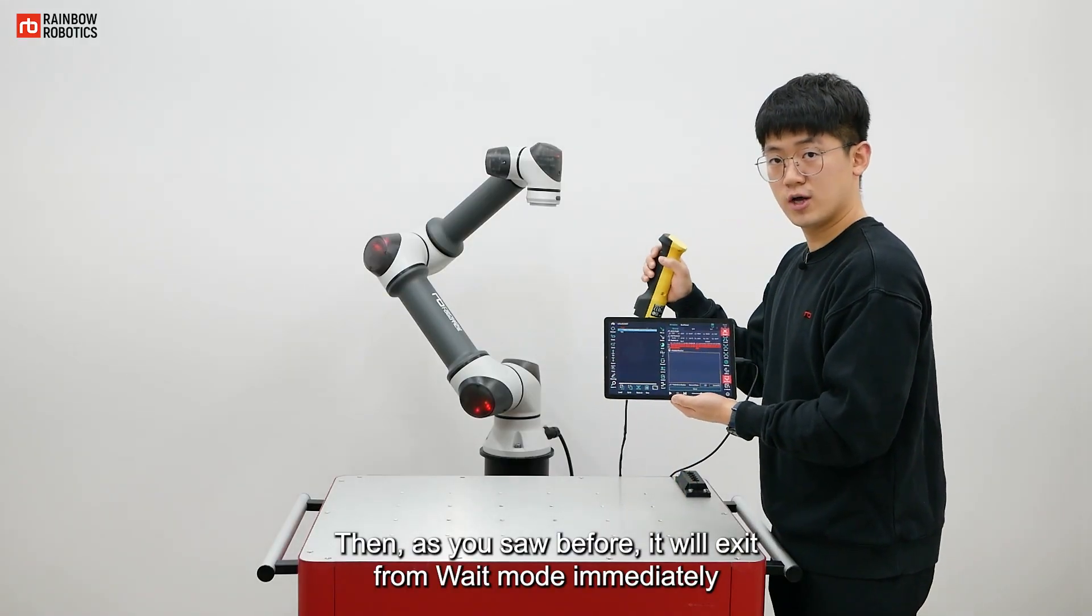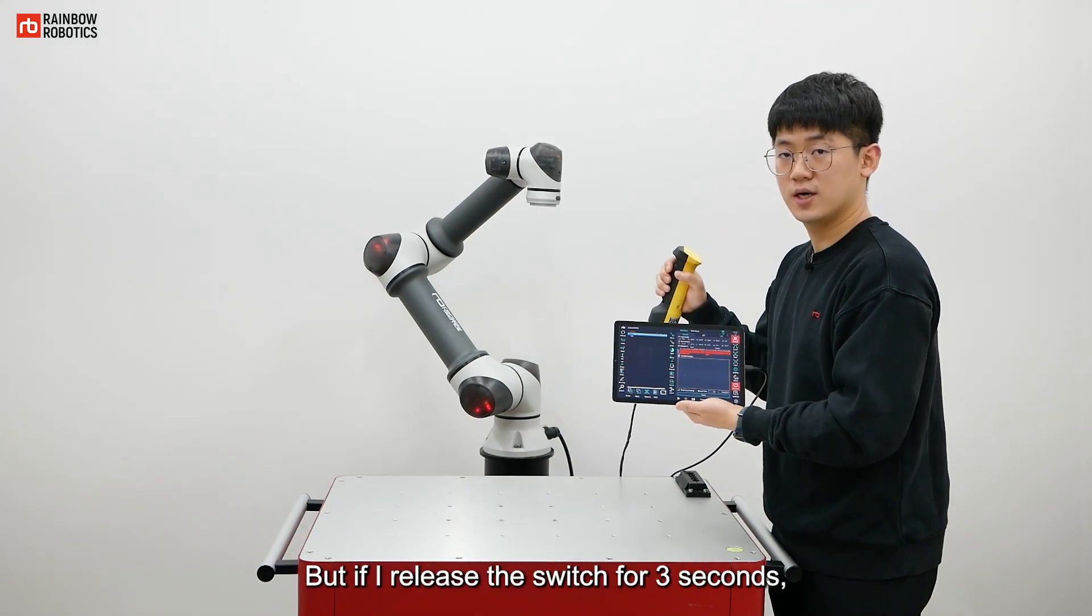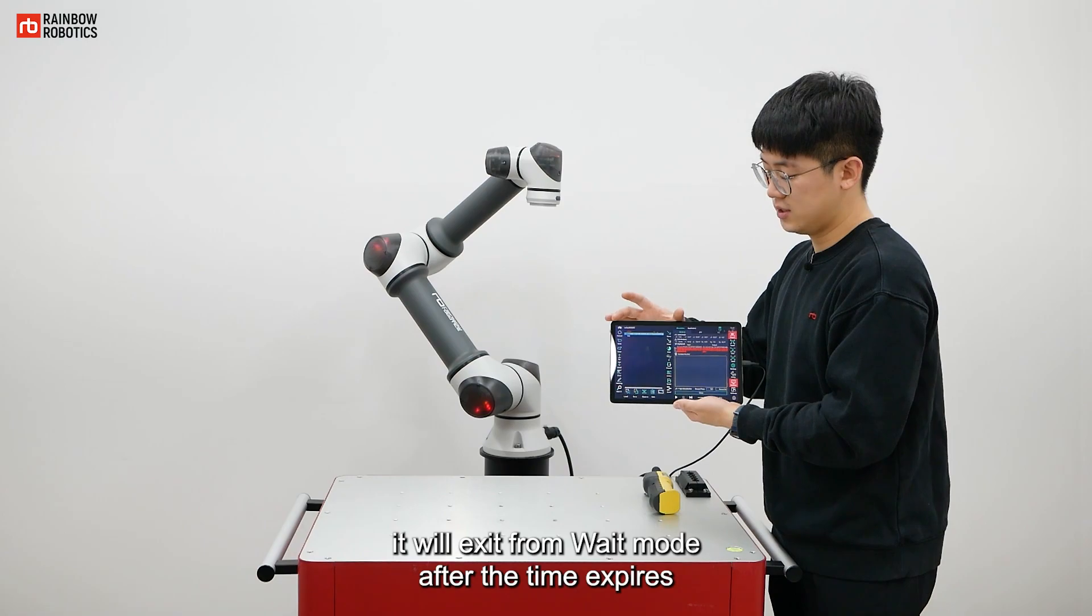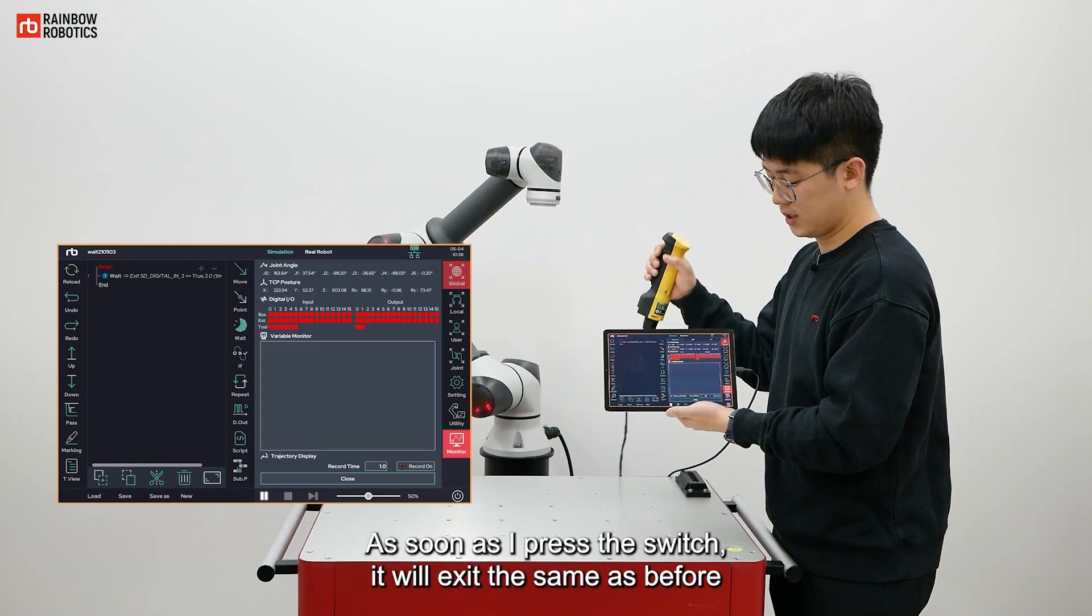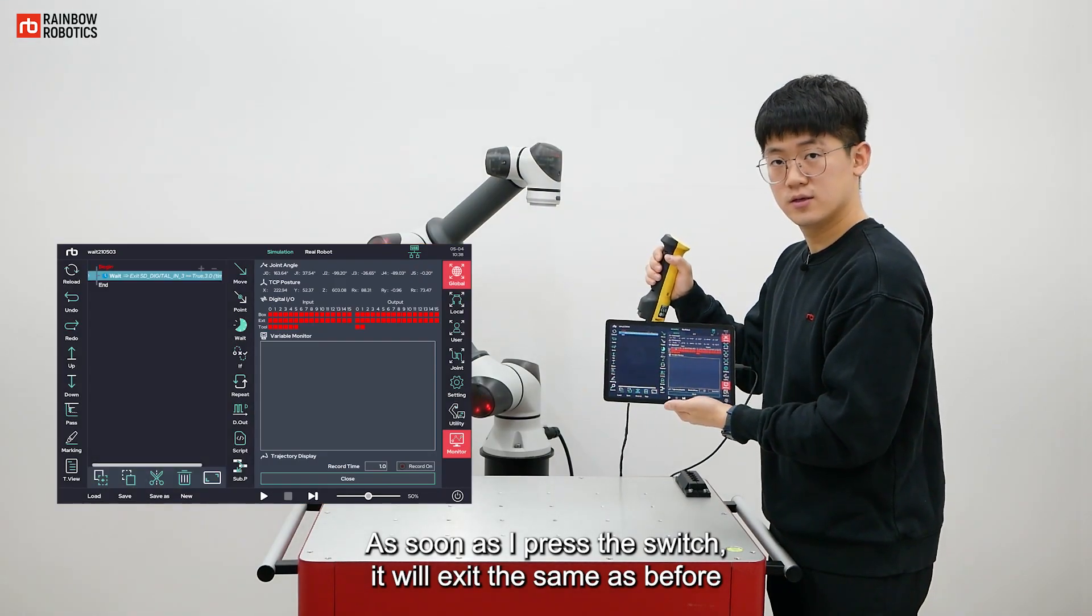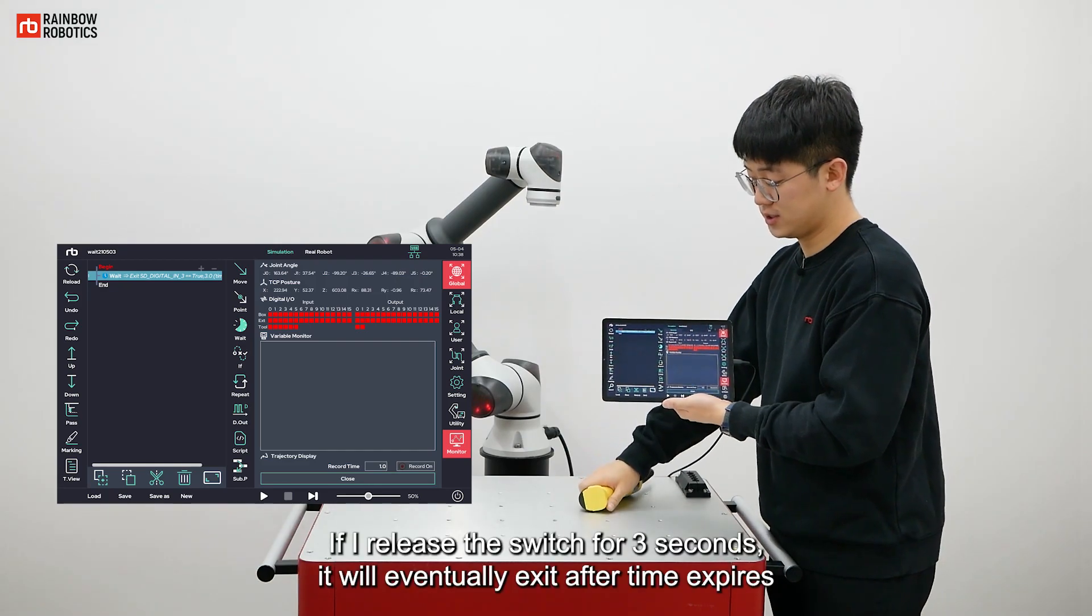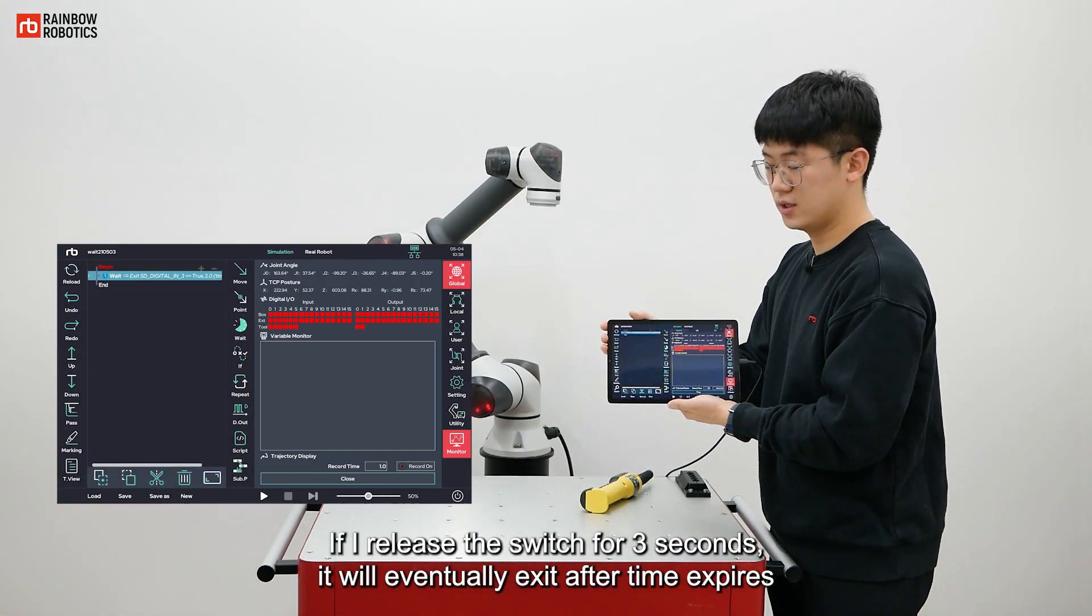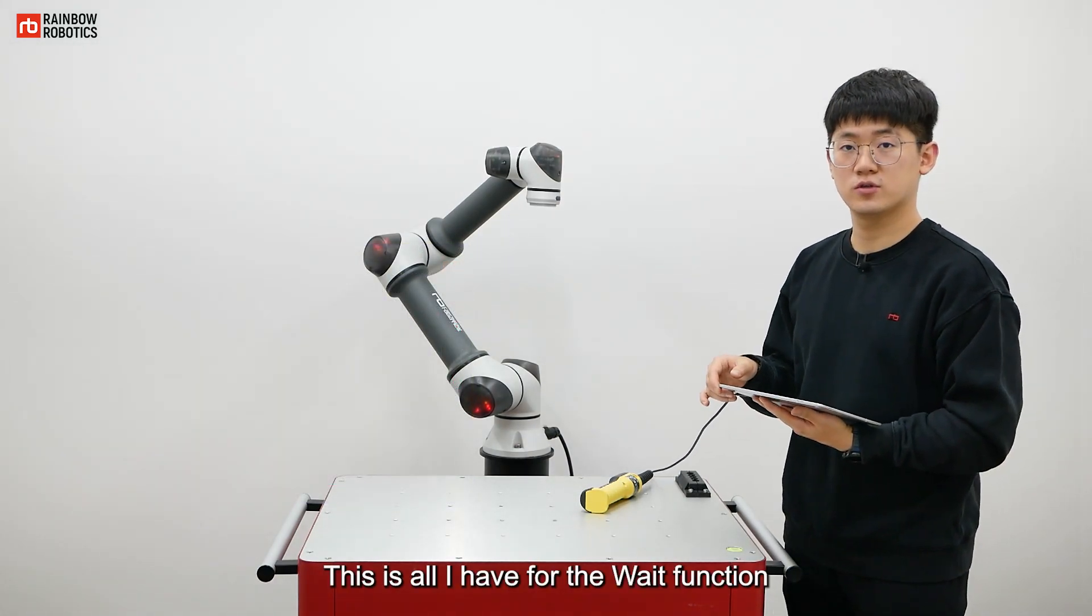Then, as you saw before, it will exit from wait mode immediately. But if I release the switch for 3 seconds, it will exit from wait mode after the time expires. As soon as I press the switch, it will exit the same as before. If I release the switch for 3 seconds, it will eventually exit after time expires. This is all I have for the wait function.